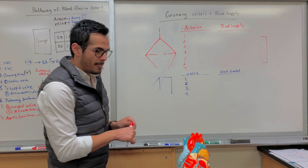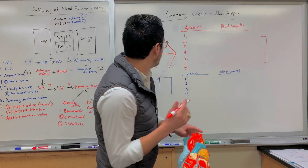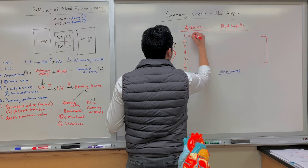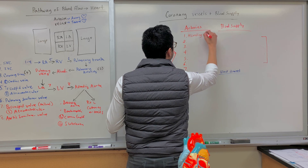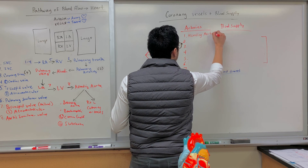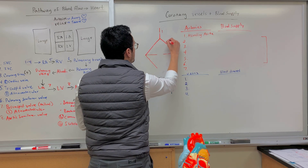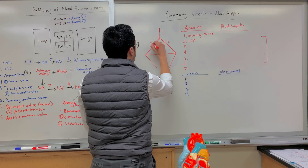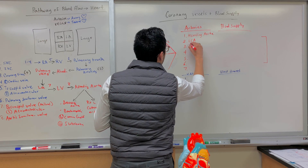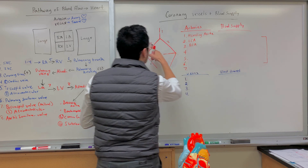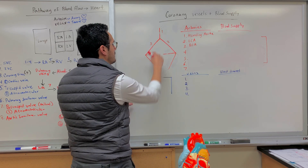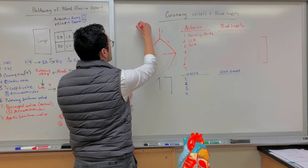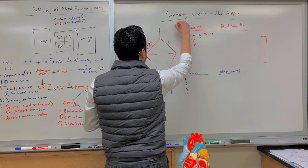Coming off of the ascending aorta, number one is the ascending aorta. Number two is the left coronary artery, and number three is the right coronary artery. They're diverging to the right and to the left.